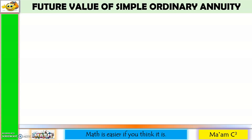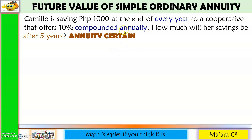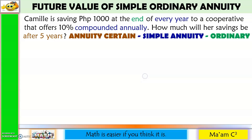Future value of simple ordinary annuity. Camille is saving P1,000 at the end of every year to a cooperative that offers 10% compounded annually. How much will her savings be after 5 years? So it says here after 5 years, so this is annuity certain. Camille is saving every year and the interest is compounded annually — every year coincides with annually, so this is simple annuity. And Camille is saving every end of the year, so this is an ordinary annuity.